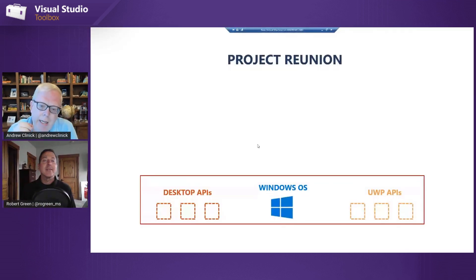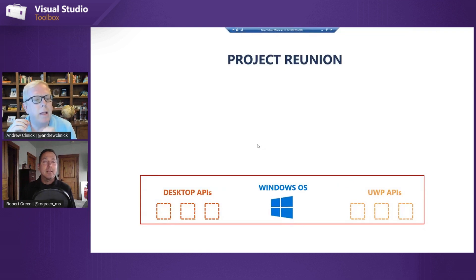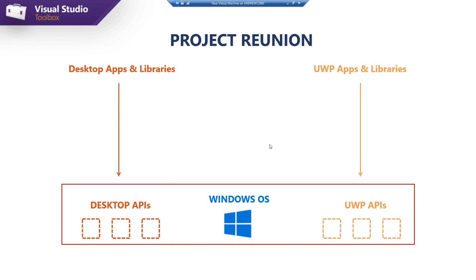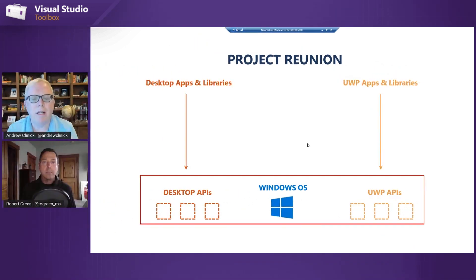I have a handy little diagram. It covers the entirety of what your application wants to run. Today, desktop apps like WPF or WinForms call desktop APIs, and UWP apps call UWP APIs. To a certain extent they can mix and match, but it was kind of confusing.